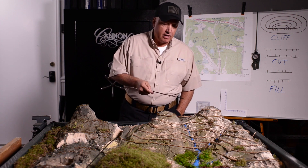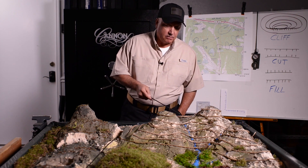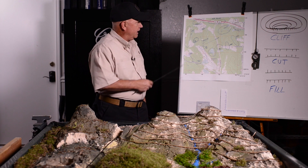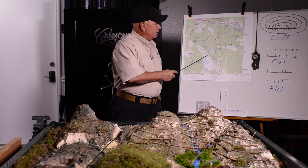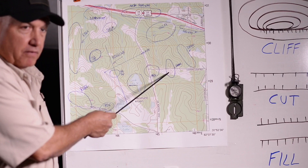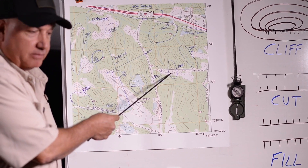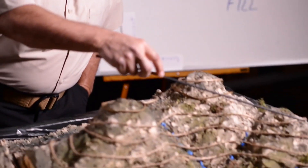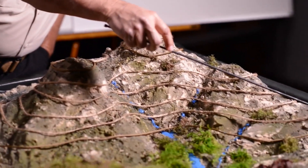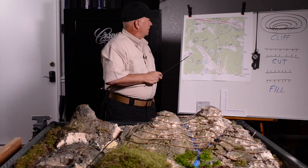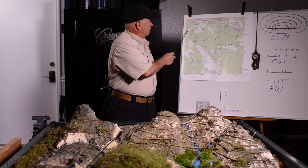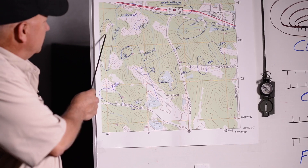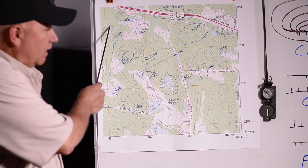We also have a saddle right here — two hilltops with some low ground in between. You can look at that right here on your map, perfectly represented. We have a ridge that drops off the edge down this direction, and here's a good example of a ridge on your map right here.